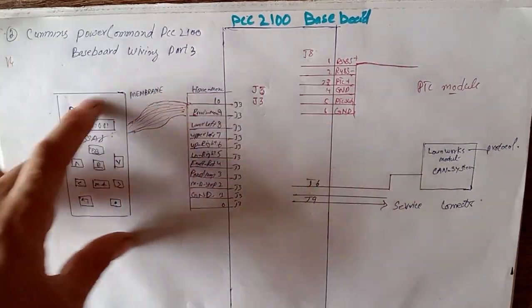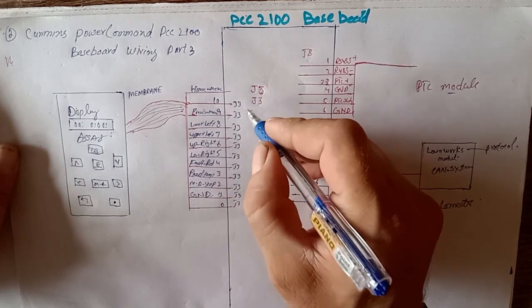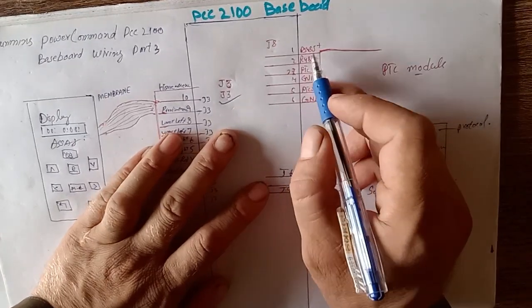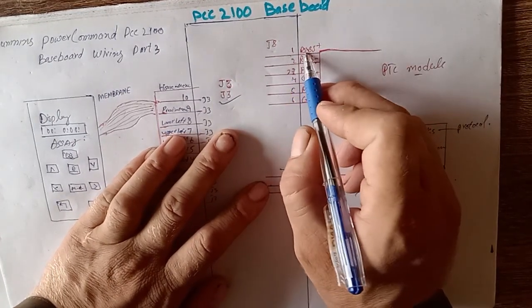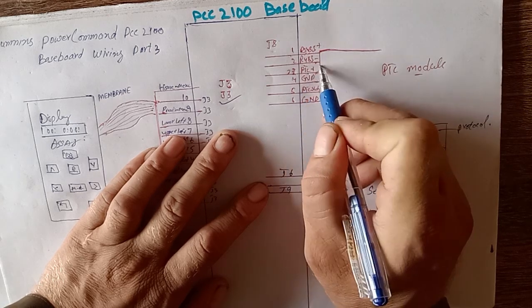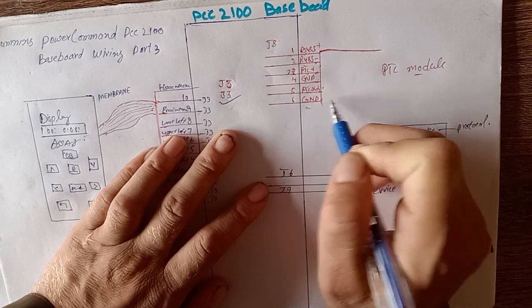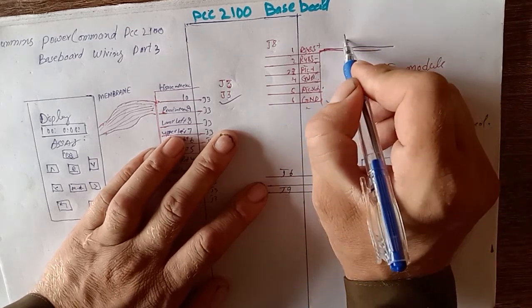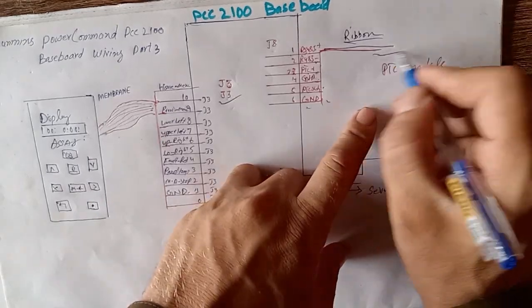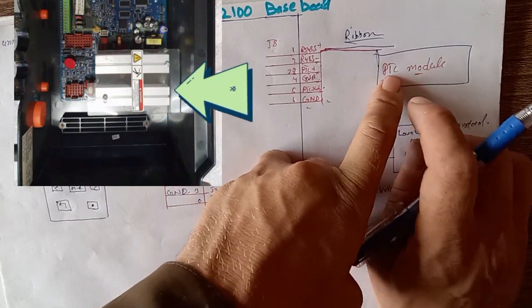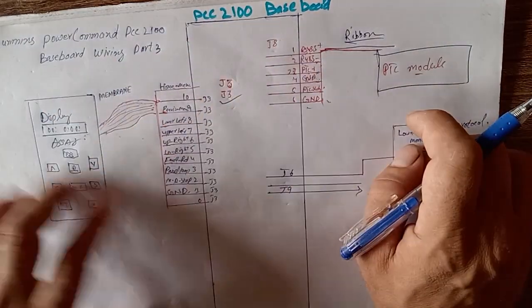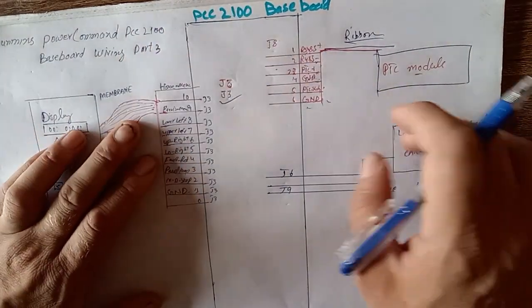J8 has RS485 power, RS485 negative, PTC plus, ground, and PTC states. This is a ribbon type of cable going to the PTC module. PTC means positive temperature coefficient. This is for cooling down the complete PTC baseboard.